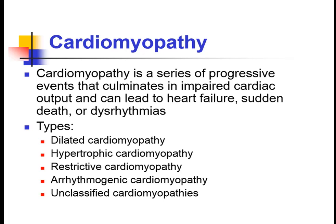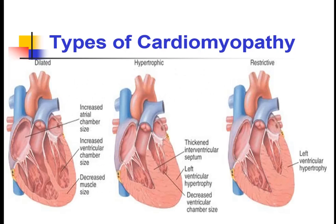The types of cardiomyopathy include dilated cardiomyopathy, hypertrophic cardiomyopathy, restrictive cardiomyopathy, arrhythmogenic cardiomyopathy, and unclassified cardiomyopathy. Their names are given according to their pathology. In dilated cardiomyopathy, there is an increased atrial and ventricular chamber size with decreased muscle mass — the atrial and ventricular areas increase in anatomical changes.